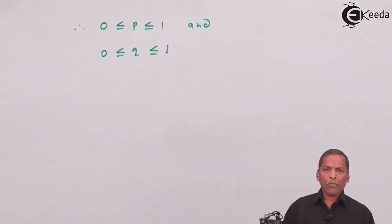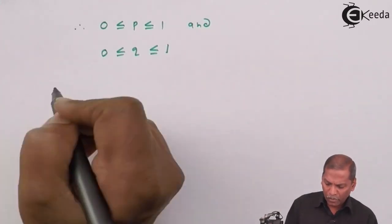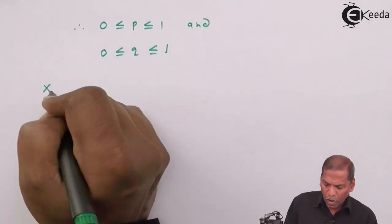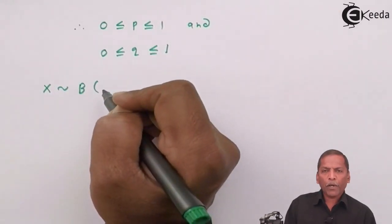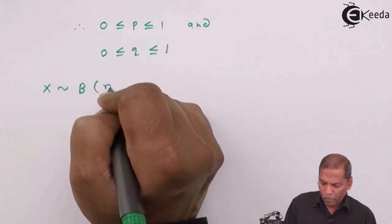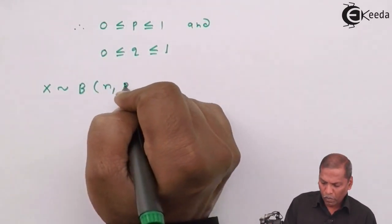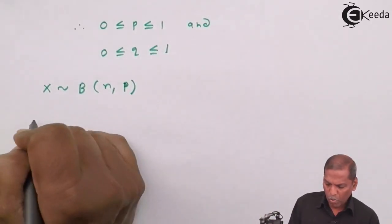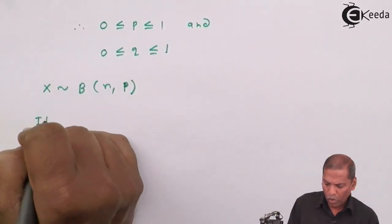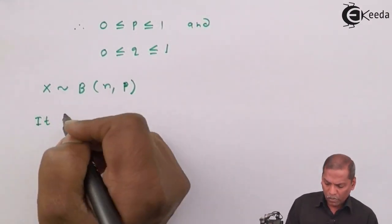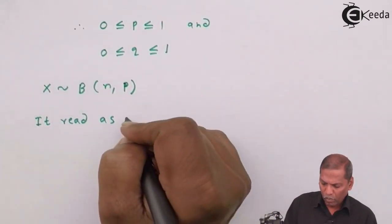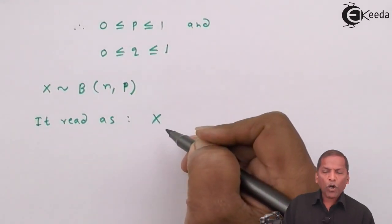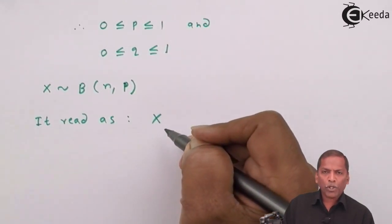Now, here we use one notation that X follows binomial distribution with parameter n and p. So it reads as X follows binomial distribution with parameter n and p.